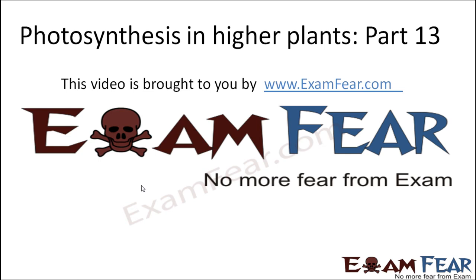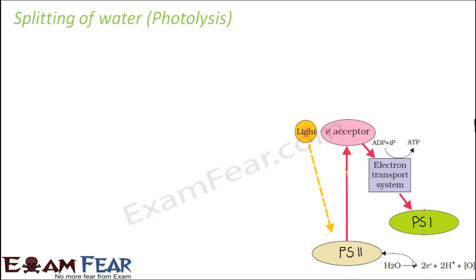This video on photosynthesis in higher plants part 13 is brought to you by examfear.com. Let us now look at the next step, that is splitting of water. This process of splitting of water is also known as photolysis. Lysis means to cut or to break down, and photo means light — so photolysis means breaking down of water in presence of light.